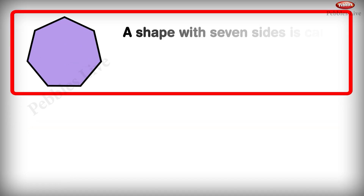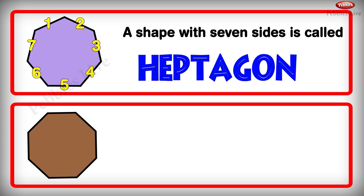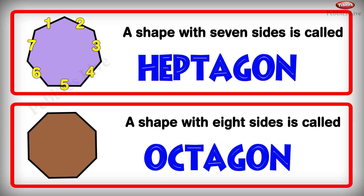A shape with 7 sides is called a heptagon: 1, 2, 3, 4, 5, 6, 7. A shape with 8 sides is called an octagon: 1, 2, 3, 4, 5, 6, 7, 8.